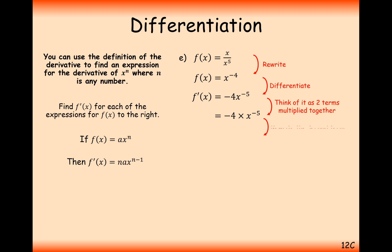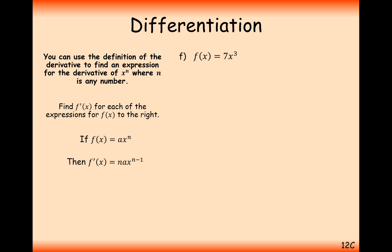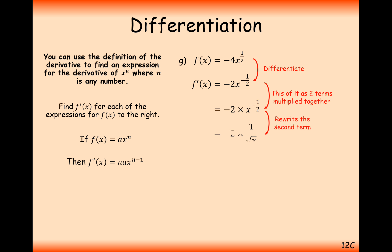Rewriting the term as an expression of x: treat x to the minus 5 as 1 over x to the 5, and multiply together to get minus 4 over x to the power of 5. Another one with a number at the front: 7x cubed, so 3 multiplies by 7 to make 21, and the 3 gets reduced by 1 to a 2. For minus 4x to the power of a half: the half times minus 4 gives minus 2, then reduce the power by 1 to get minus a half — so minus 2x to the minus half, which we write as minus 2 over root x.